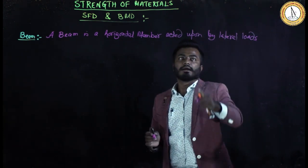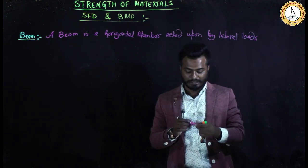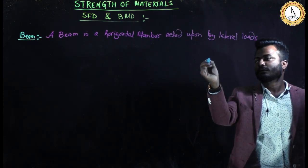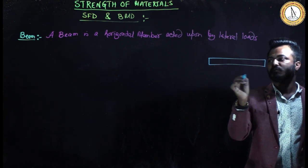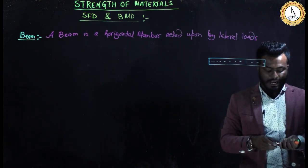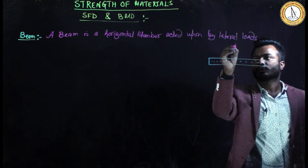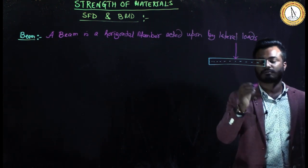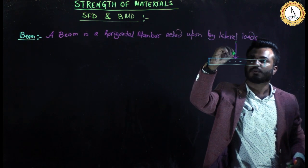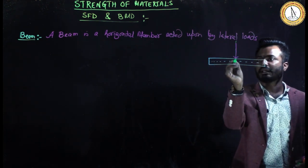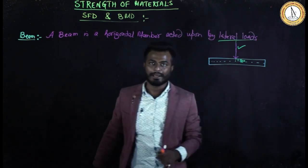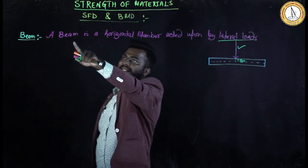A beam must be horizontal, and it should be acted upon by lateral load. To understand lateral load: if this is my horizontal member and this is its axis, then I need to apply a force whose axis is 90 degrees to the axis of the member. That load is called the lateral load for that member.